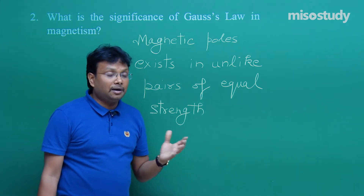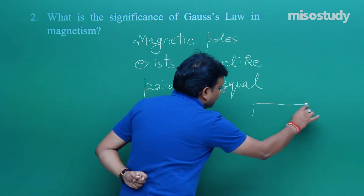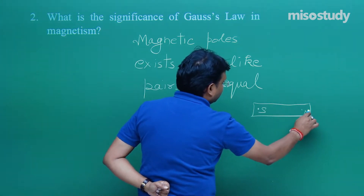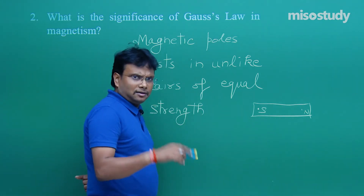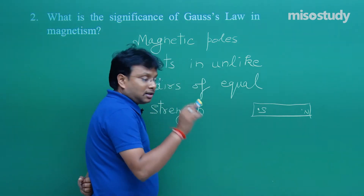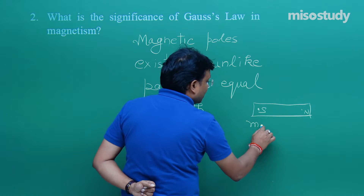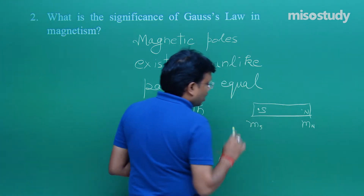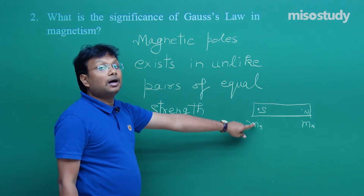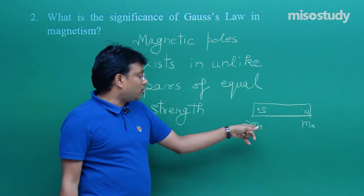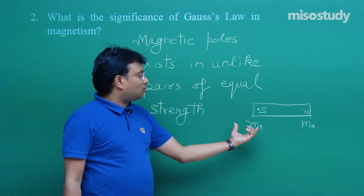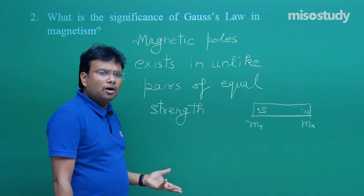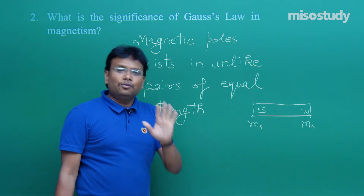Recall the diagram of a bar magnet from the initial videos of this chapter — south pole on one side, north pole on the other. I assigned magnetic charge ms to the south pole and mn to the north pole. So we have unlike pairs — south and north — and the strength of both poles is similar. This is the answer to question number 2, and even drawing the diagram with a mention will earn you the complete one mark.